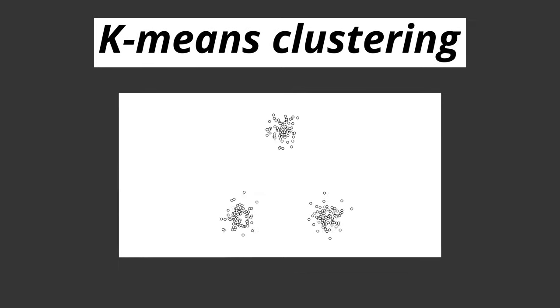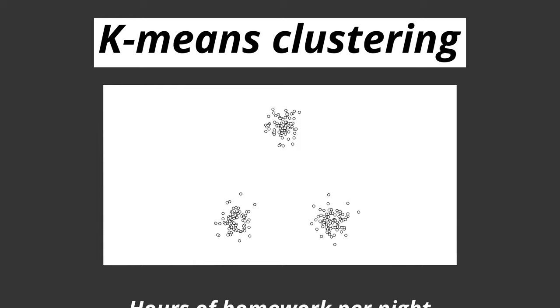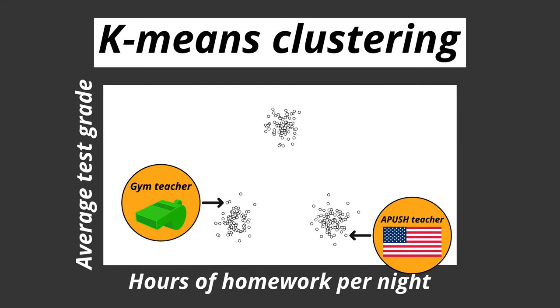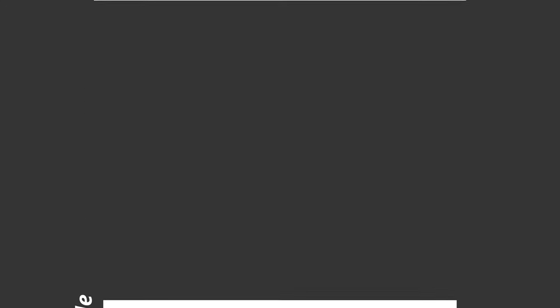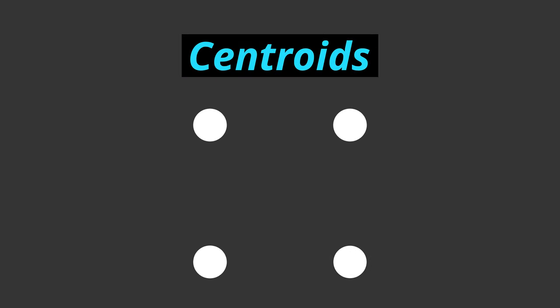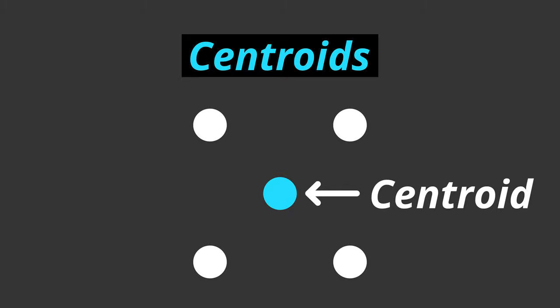K-means clustering is one of the more popular algorithms used for clustering. Our teacher dataset has two characteristics: the average amount of homework per night in hours, and the difficulty of tests, which we can quantify with average test grades. Perhaps on the x-axis we have the hours of homework per night, and on the y-axis we have the average test grade. First one chooses K, the number of clusters, and thus centroids. Centroids are essentially the mean position of a certain number of data points.